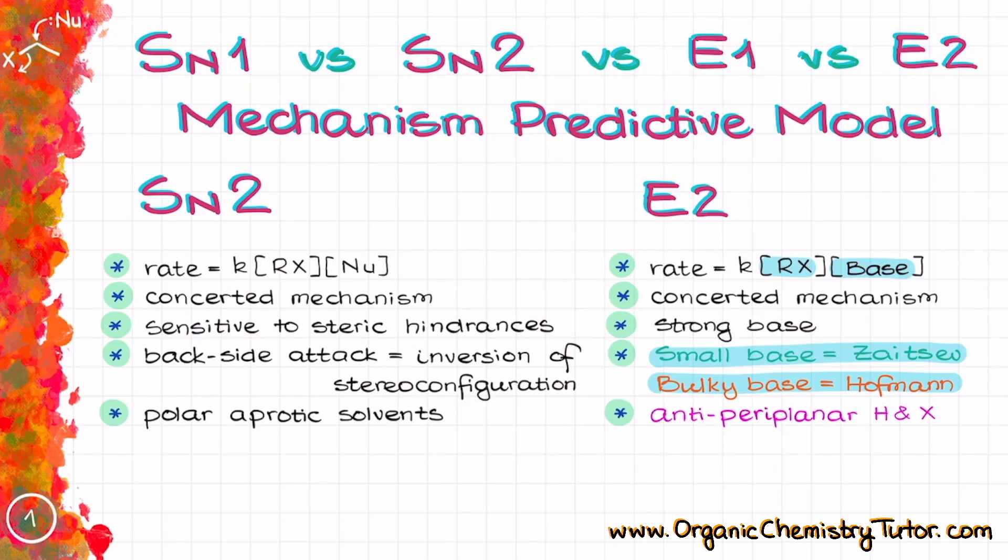Additionally, the E2 reactions are extremely sensitive to the conformation of the transition state and they do require you to have the antiperiplanar hydrogen and the leaving group in your molecule. So if we cannot find an antiproton in the beta position, the E2 reaction is simply going to be impossible.